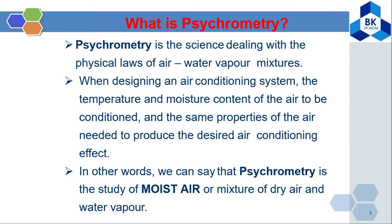When designing an air conditioning system, the temperature and moisture content of the air to be conditioned — and the same properties of the air needed to produce the design air conditioning effect — must be understood. By the end of your study you will do a thesis, and in the thesis you will design part of an air conditioning system, contributing 25% of your total mark. In other words, psychrometry is the study of moist air, or the mixture of dry air and water vapor.